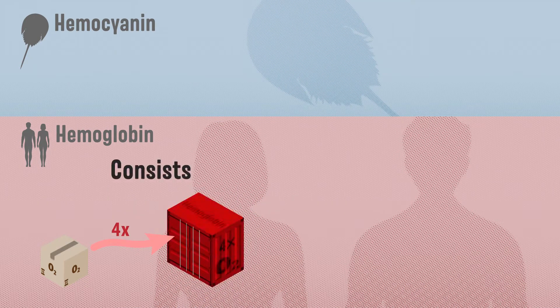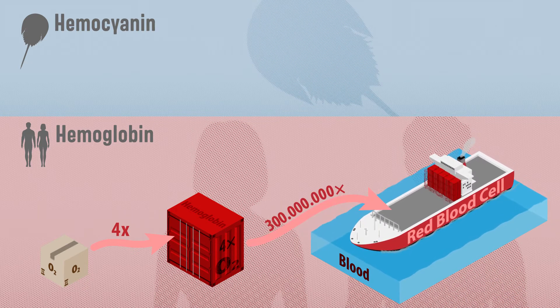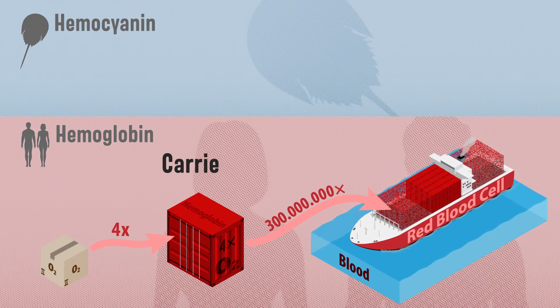Haemoglobin consists of four subunits and turns from dark to bright red upon oxygenation. Each red blood cell carries as many as 300 million copies of haemoglobin.